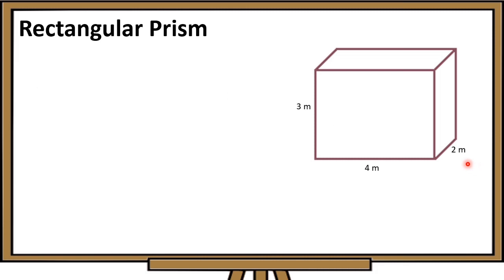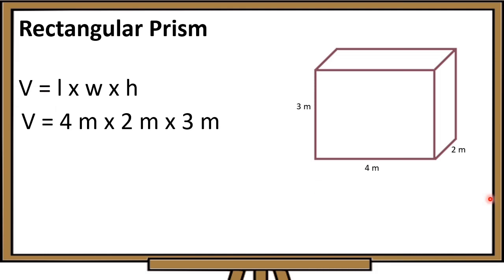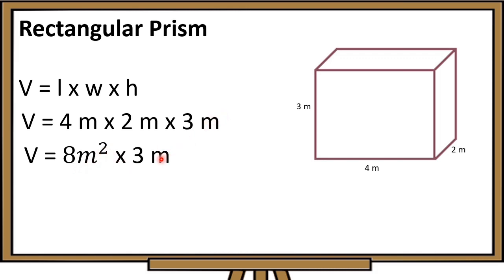To solve for the volume of a rectangular prism using the formula: length times width times height. Our length is 4 meters, times width 2 meters, times height 3 meters. 4 meters times 2 meters is 8 square meters, times height 3 meters. 8 times 3 equals 24. We have a volume of 24 cubic meters.